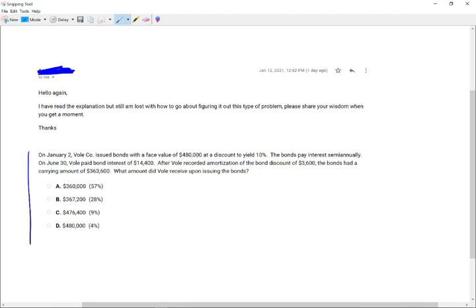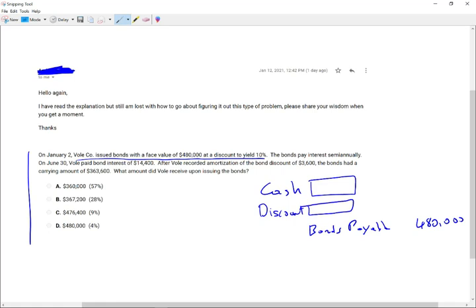On January 2nd, Vol issued bonds with a face value of $480,000 at a discount to yield 10%. So this is what we know from this statement. From this statement, we did the following. The company debited cash, credited bonds payable $480,000. Now, we don't know the cash amount. We're not given this information. And we know it's a discount. Therefore, we debited a discount. That's all what we know from this information. Obviously, the cash amount has to be less than $480,000 because it was a discount bond.